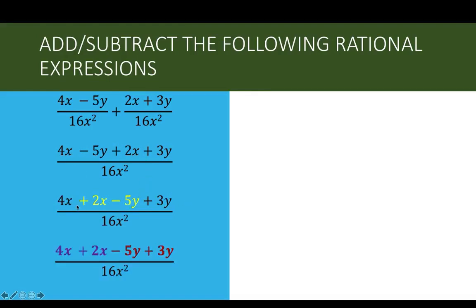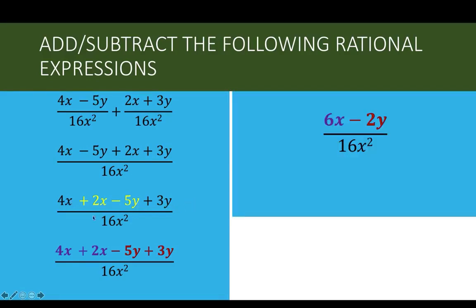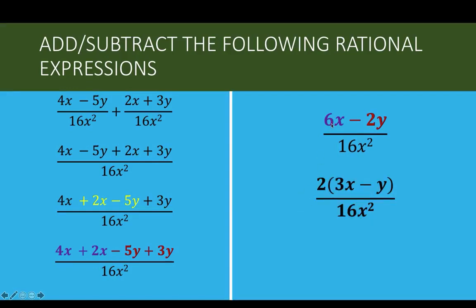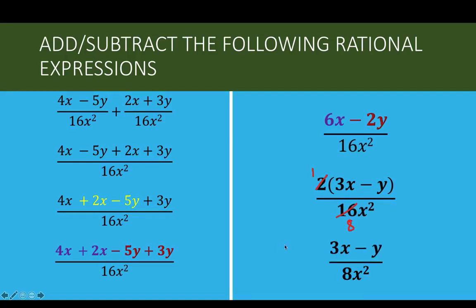By applying the commutative and associative properties, we can rearrange and group terms: 4x plus 2x equals 6x, and negative 5y plus 3y equals negative 2y, over 16x squared. Always reduce to the lowest term — there is a common factor of 2 between 6 and 2. Factoring out 2 and canceling gives us a final answer of 3x minus y over 8x squared.